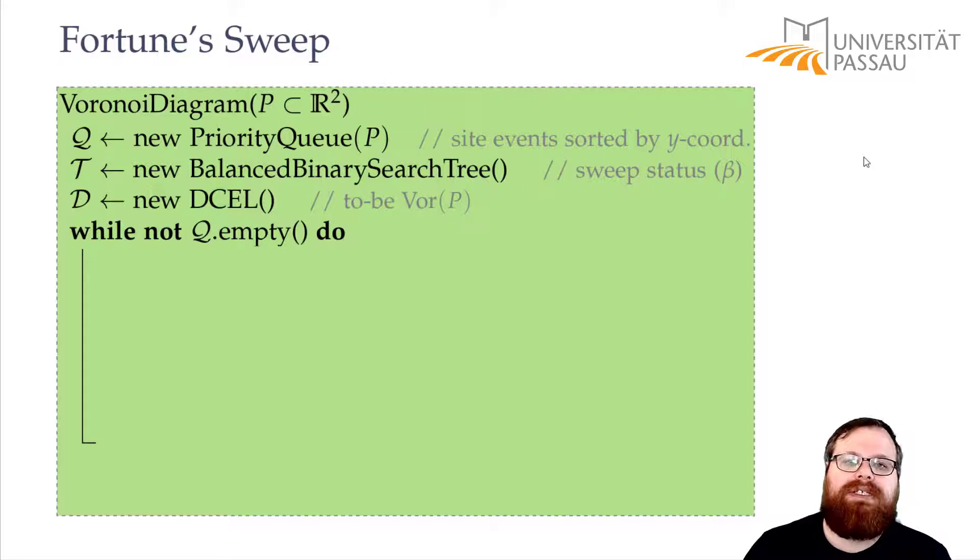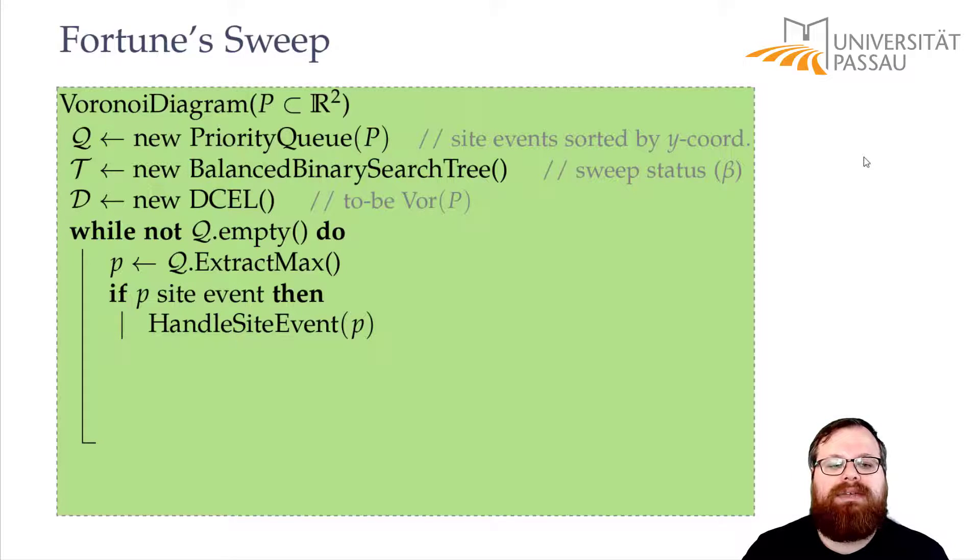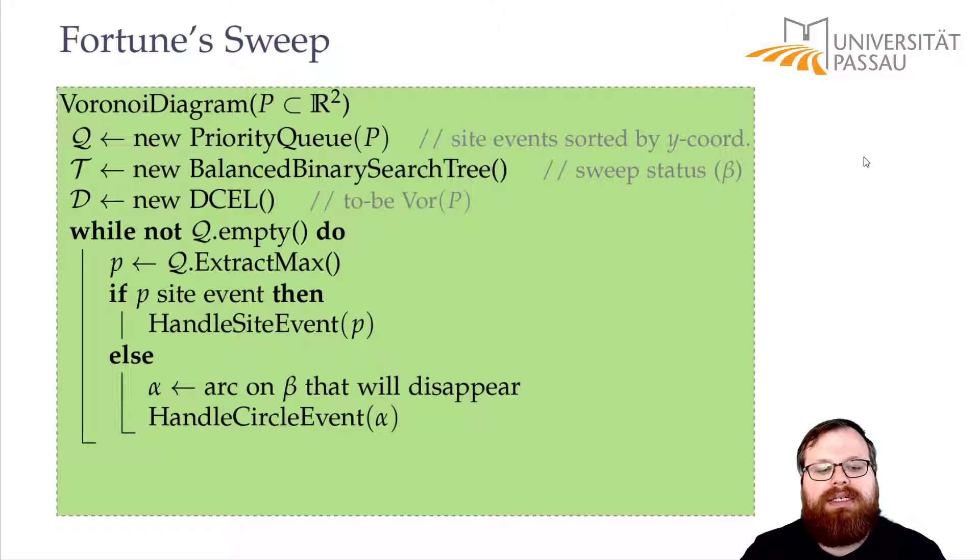Now we go through our event queue and we handle all the events, just like in a normal sweep. So we take the next event and if it is a site event, then we use a subroutine handle site event of p. And otherwise it's a circle event. We find the arc that will disappear and handle the circle event for this arc.